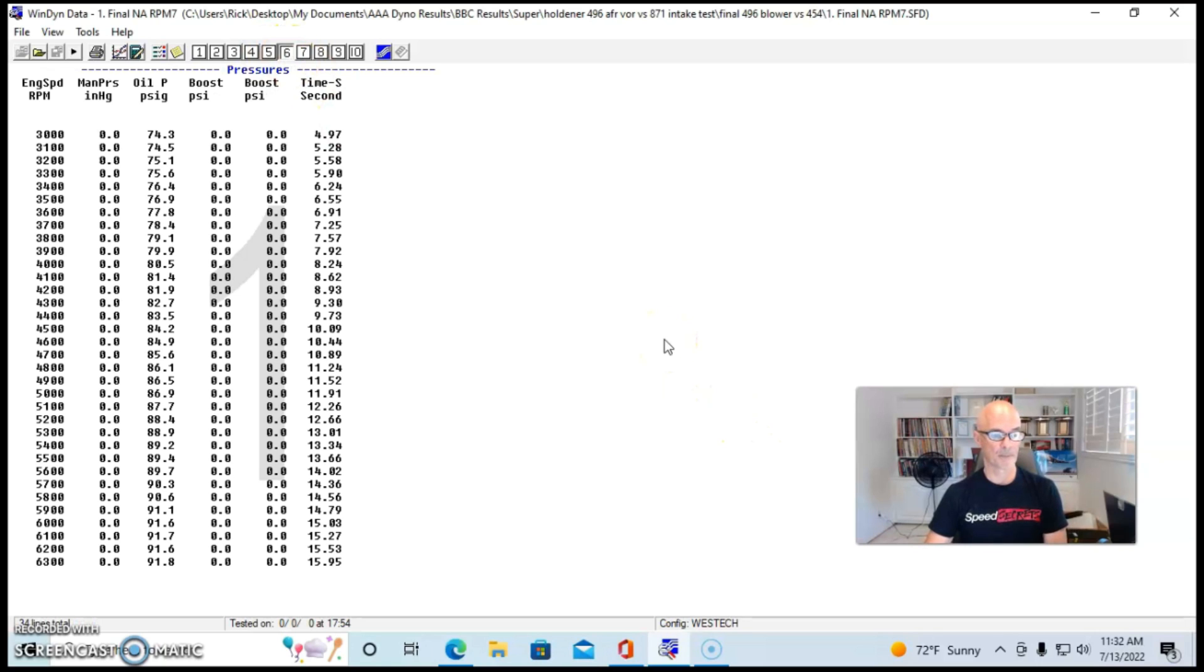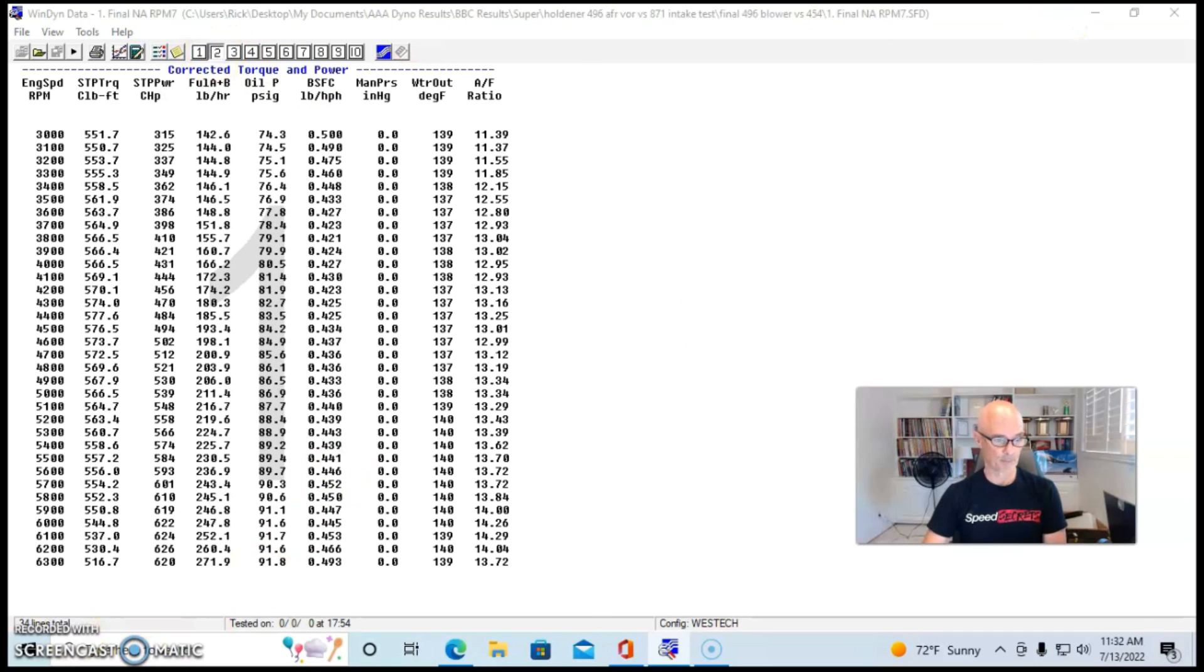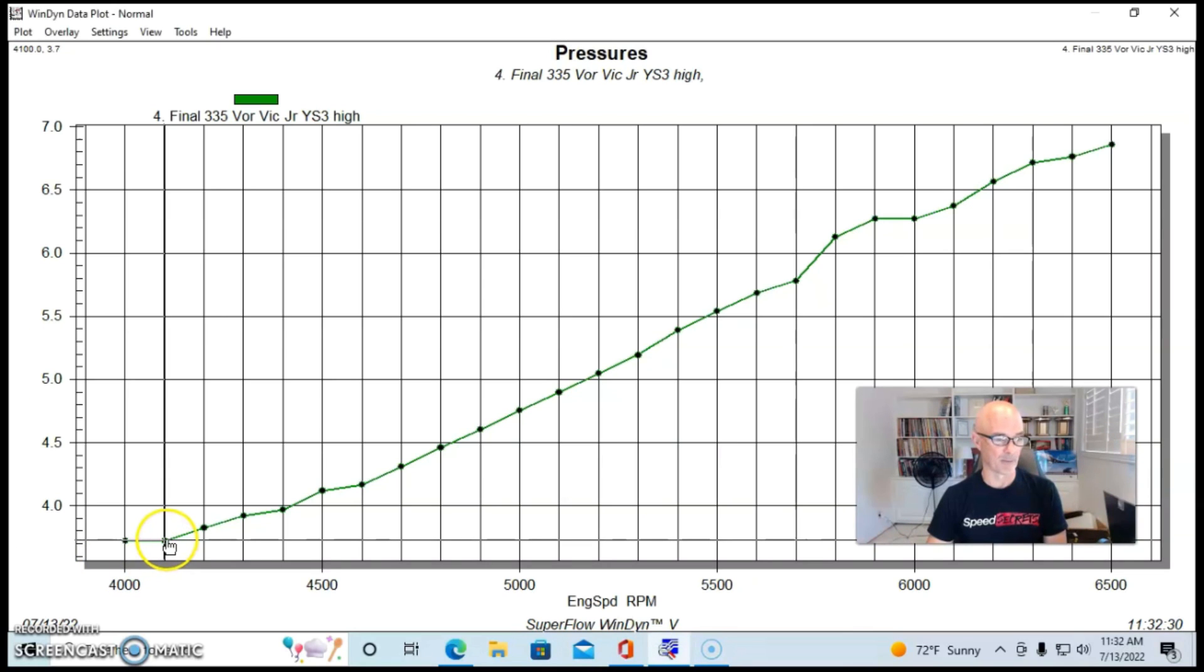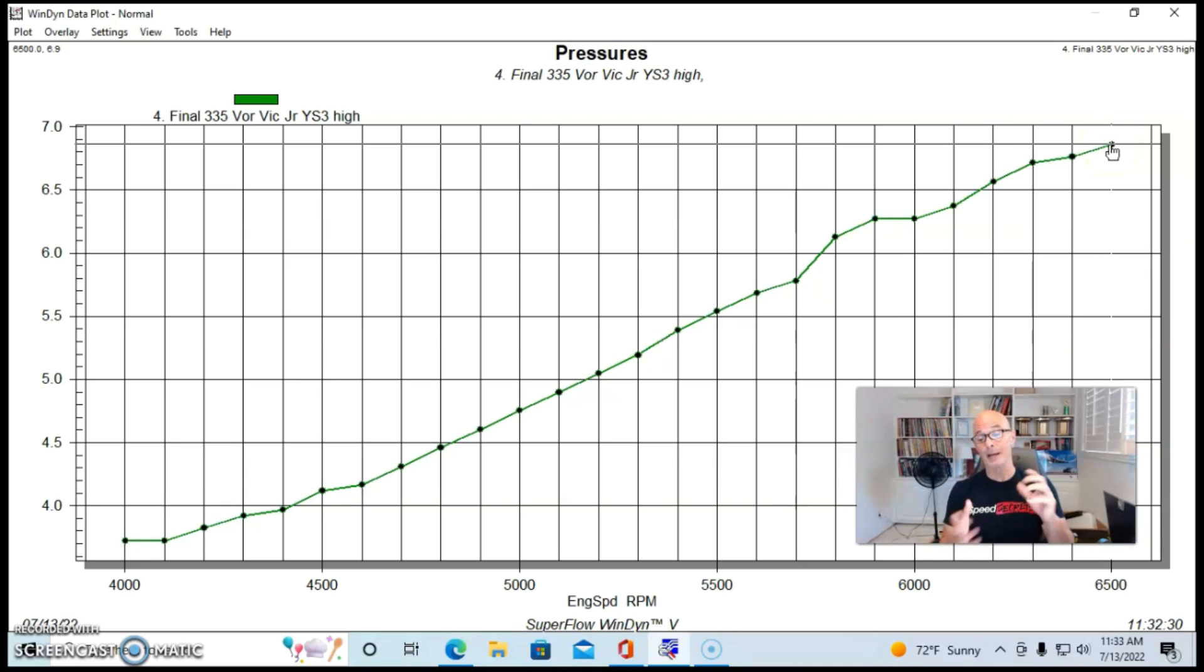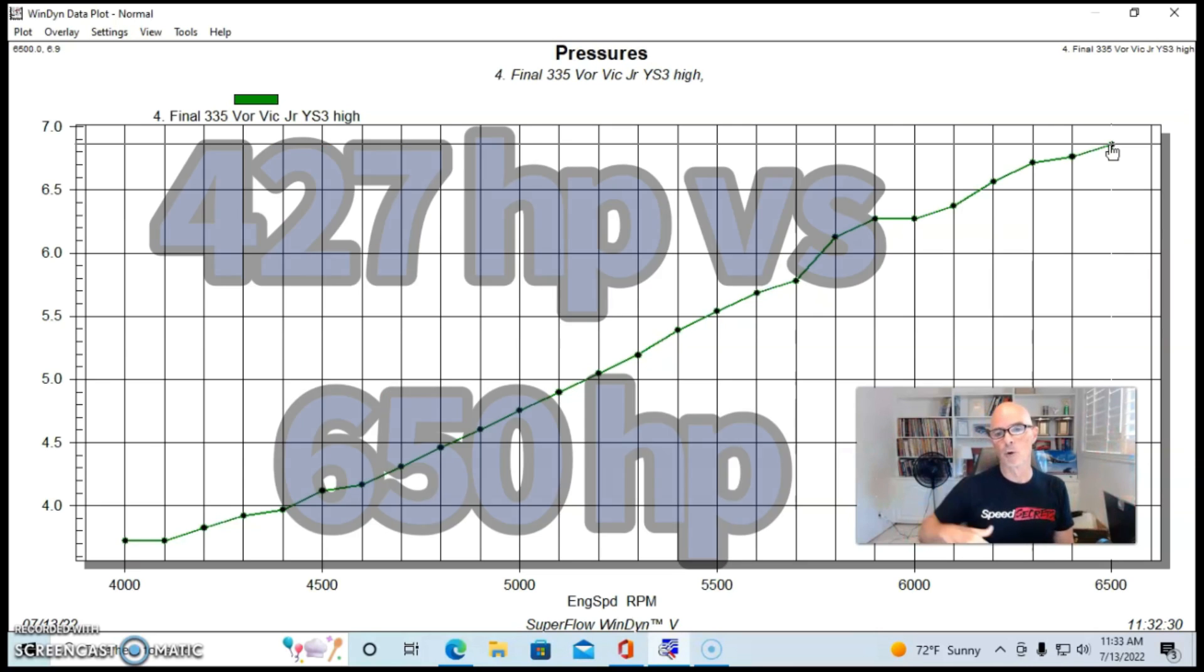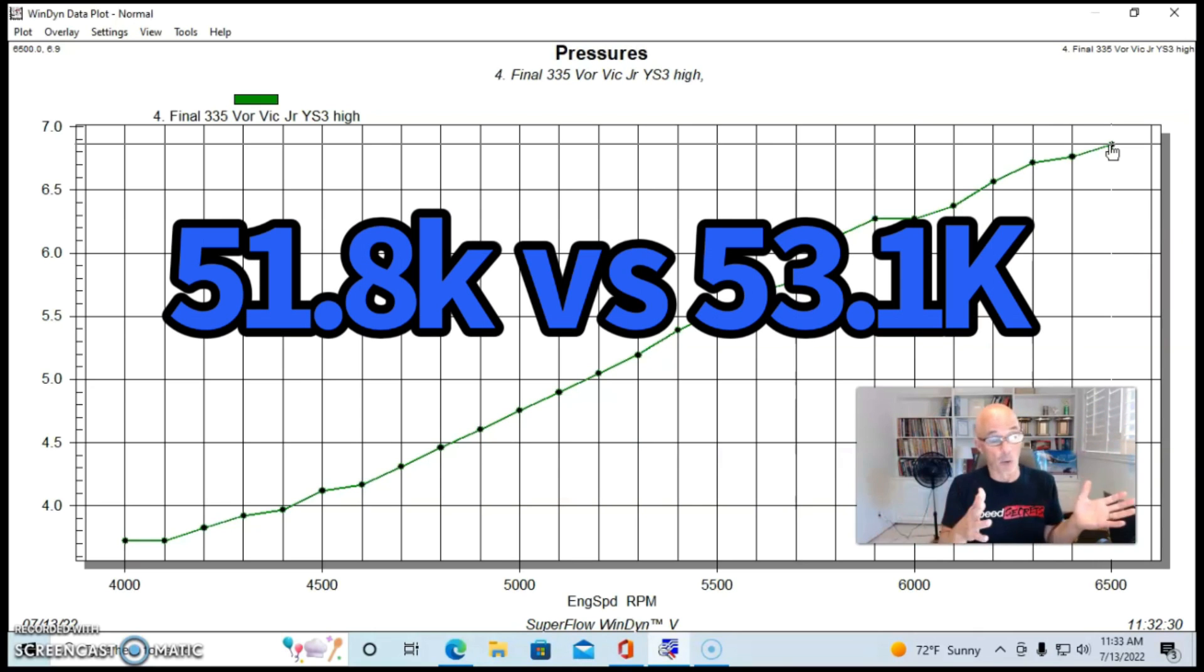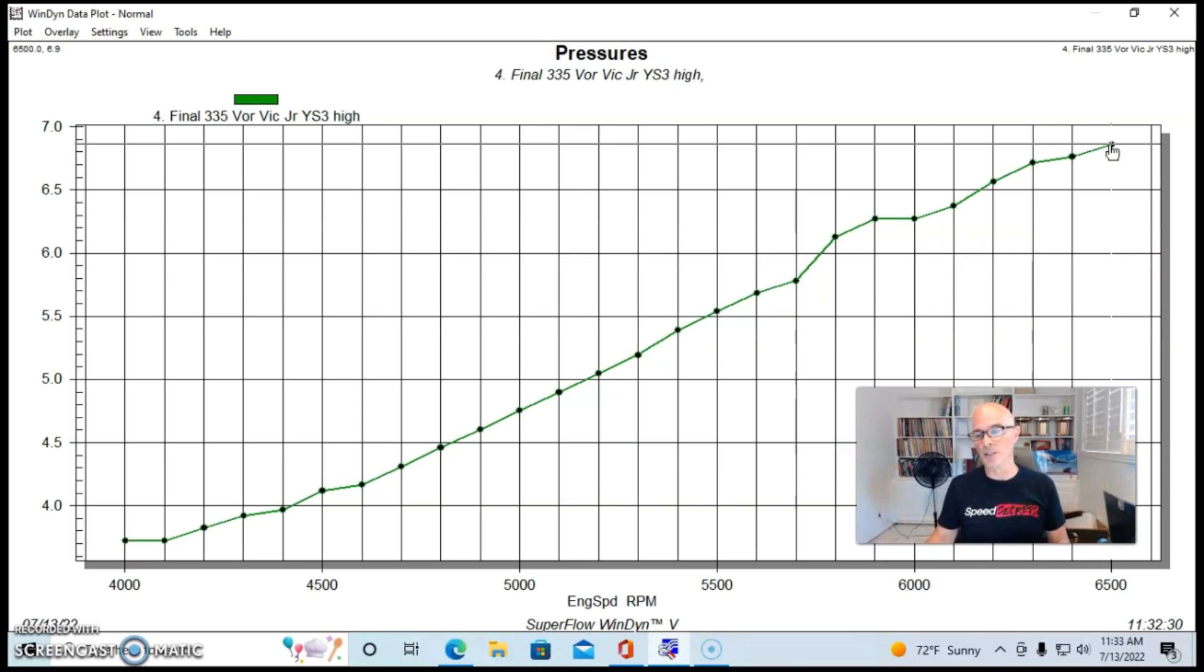Here's what the boost pressure curve looked like on the much larger more powerful 496. We started off at 3.7 pounds, it rose to a peak of 6.9 pounds at 6500 rpm. Remember we only ran the other 454 up to about 6000 so we ran this quite a bit higher. But because the blower speed was probably different and more importantly the change in naturally aspirated combination, the power output of that helped lower the boost. What's happening is the motor is flowing a lot more air so it's not building up pressure like it did on the smaller motor.